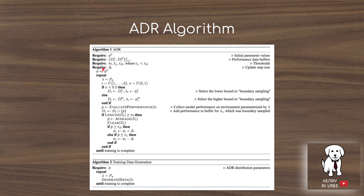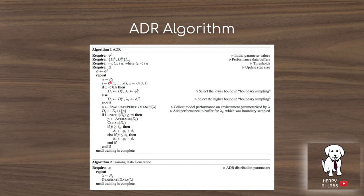From this we can understand the ADR algorithm. We start with a distribution sample of phi_0, the initial environment conditions, then sample an environment with parameters lambda from the distribution given by phi. As we train, if performance exceeds a high threshold T_h the distribution gets harder, and if it falls below the low threshold T_l — meaning the randomization is too intense — the distribution is made easier. The ADR algorithm iterates between sampling environments from the current distribution and generating new training data.